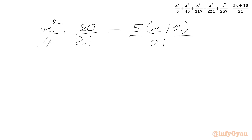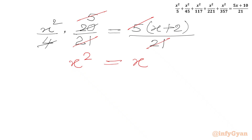We cancel 20 in the numerator with the denominator 4, giving 5. Then multiplying both sides by 5 over 21 cancels the 5 over 21 from both sides. We get x squared equal to x plus 2. Taking all terms to one side: x squared minus x minus 2 equals 0.